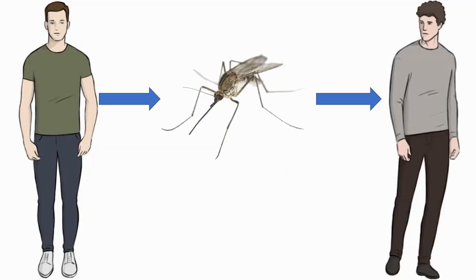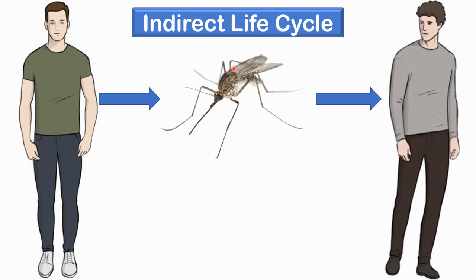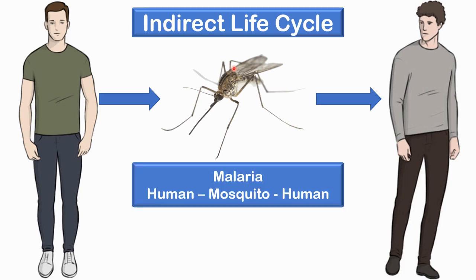Regarding the different life cycles of parasites: in an indirect life cycle, a parasite requires two or more species of host to complete its development. For example, the malarial parasite requires both a human host and a mosquito to complete its life cycle. One human cannot directly transmit the malarial parasite to another human without the mediation of mosquitoes.